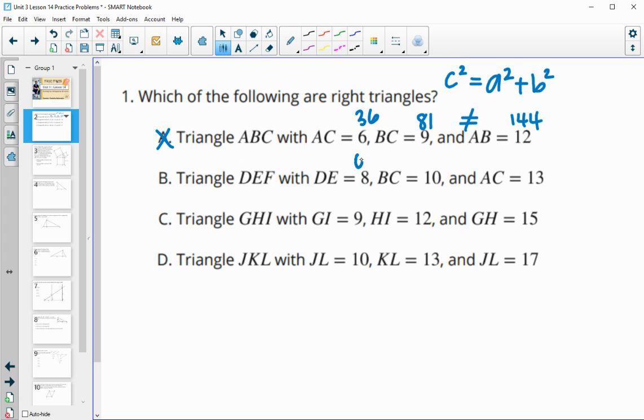In part B, 8 squared is 64, 10 squared is 100, 13 squared is 169, so that's our C value squared. And 64 plus 100 does not equal 169, so this is not a right triangle.